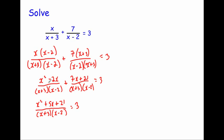When adding fractions with the same denominator, you just add the numerators. We then times both sides by x plus 3, x minus 2 to remove it from the denominator on the left, bringing it to the right-hand side. So we get x squared plus 5x plus 21 equals 3 bracket x plus 3, x minus 2.